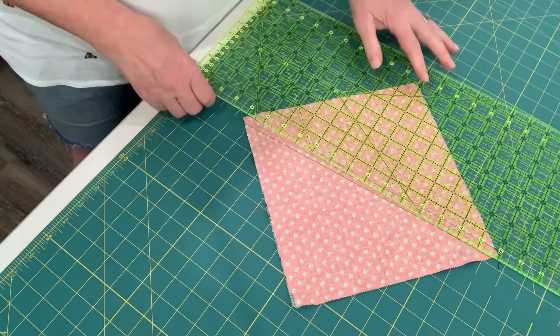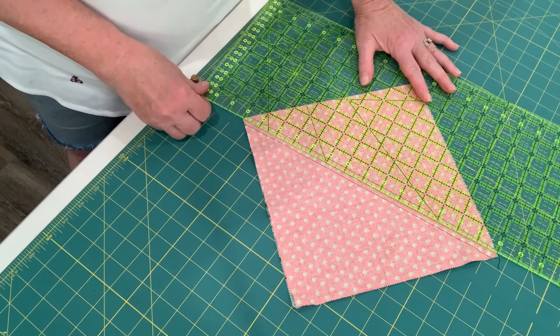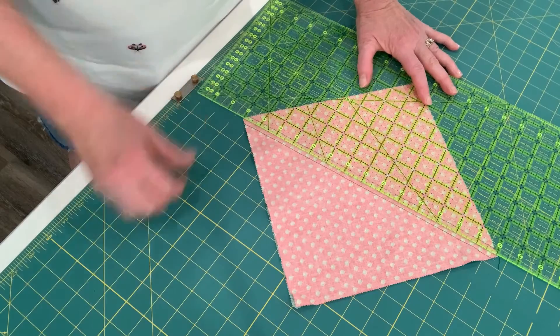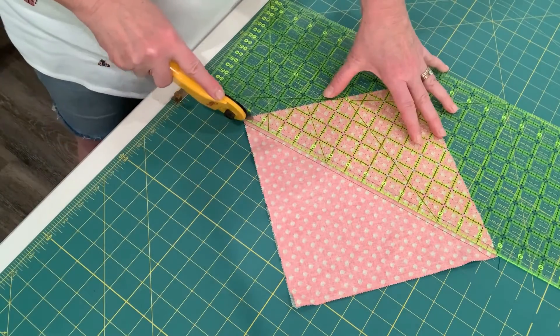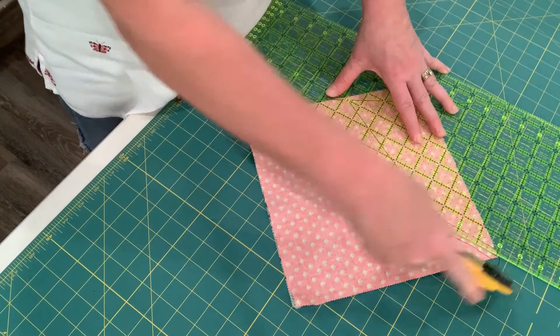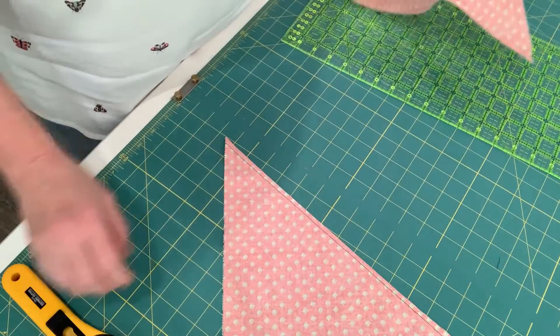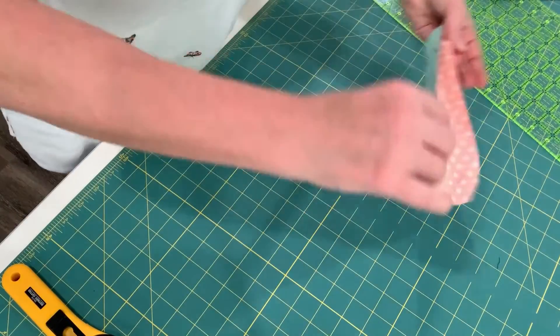So I'm going to take my ruler, line it up with the drawn line in the center, and cut the square open. So now I'm left with two triangles.